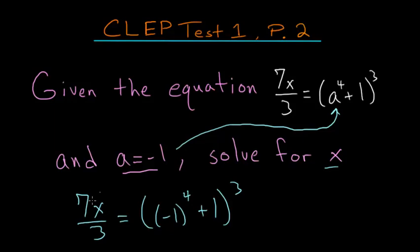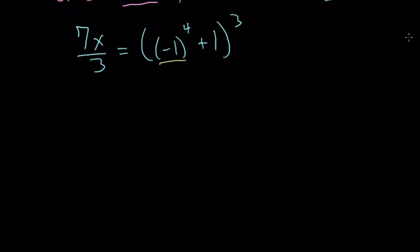If we want to solve for x, the first thing we have to do is simplify this right-hand side, specifically this negative 1 to the fourth power. So let's first think about what that means.